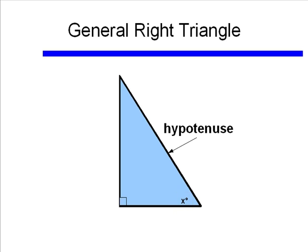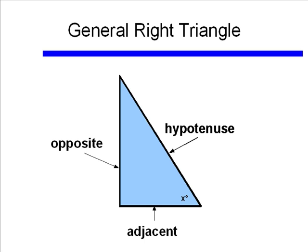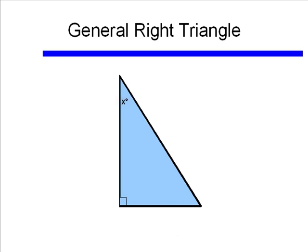The side opposite the 90 degree angle is the hypotenuse — that is the longest side of the triangle. We're now going to talk about a general way of describing all of these sides in relation to angle x. The side that is opposite angle x is called the opposite side. The side that touches and is part of angle x is called the adjacent side. So we now have the hypotenuse, the side opposite x, and the side adjacent to x.